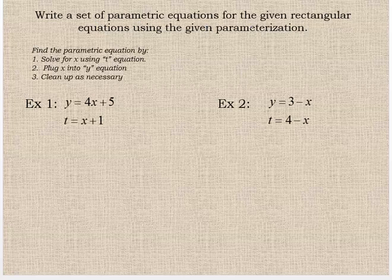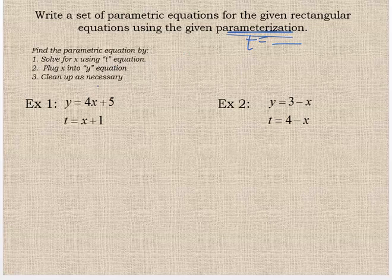You're going to write a set of parametric equations for the given rectangular equations using the given parametrization. Parametrization, that's what t equals. That's really the fancy term for whatever t equals. So it's the reverse here. You're going to solve for x using the t equation. So we're going to start with the t equation, solve it for x, then plug it into the y equation, and then we'll have two equations for x and y. So let's just work through one.